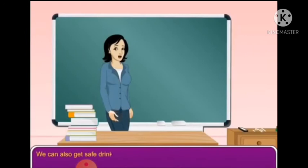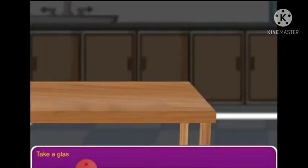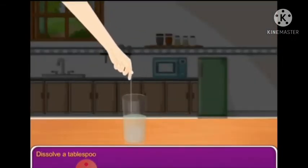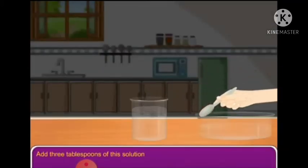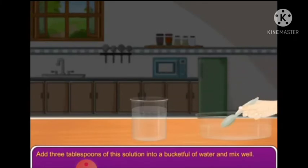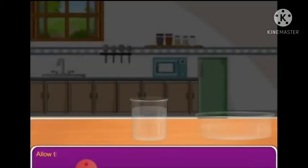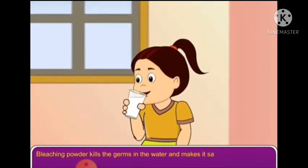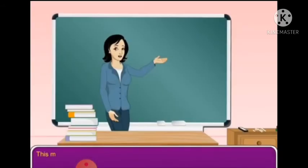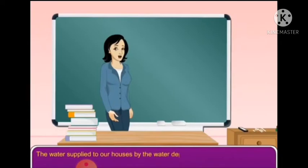We can also get safe drinking water by using chemicals. Take a glass filled with water and dissolve a tablespoon of bleaching powder into it. Add 3 tablespoons of this solution into a bucket full of water and mix well. Allow the water to stand undisturbed for about 30 minutes. Bleaching powder kills the germs in the water and makes it safe for drinking. This method is called chlorination of water, and it is used by the water department to clean the water supplied to our houses.